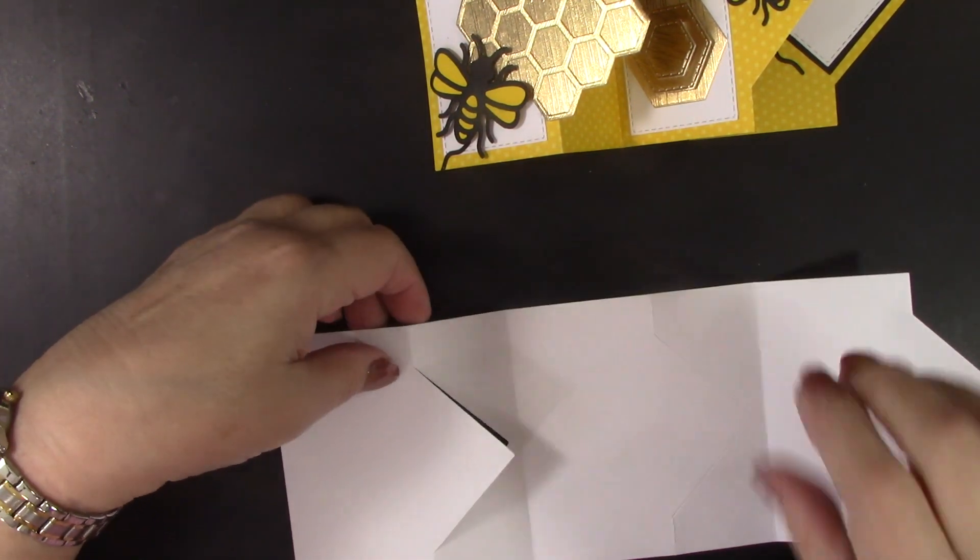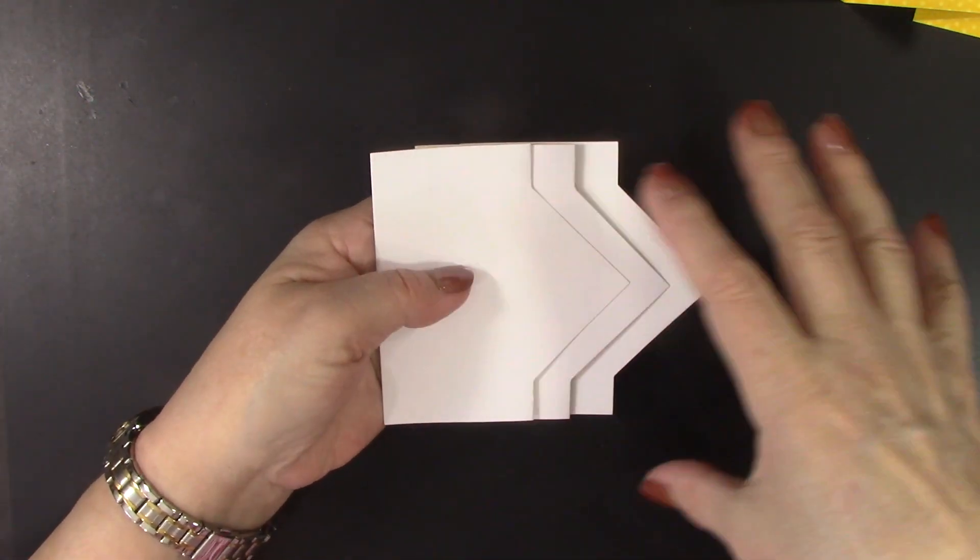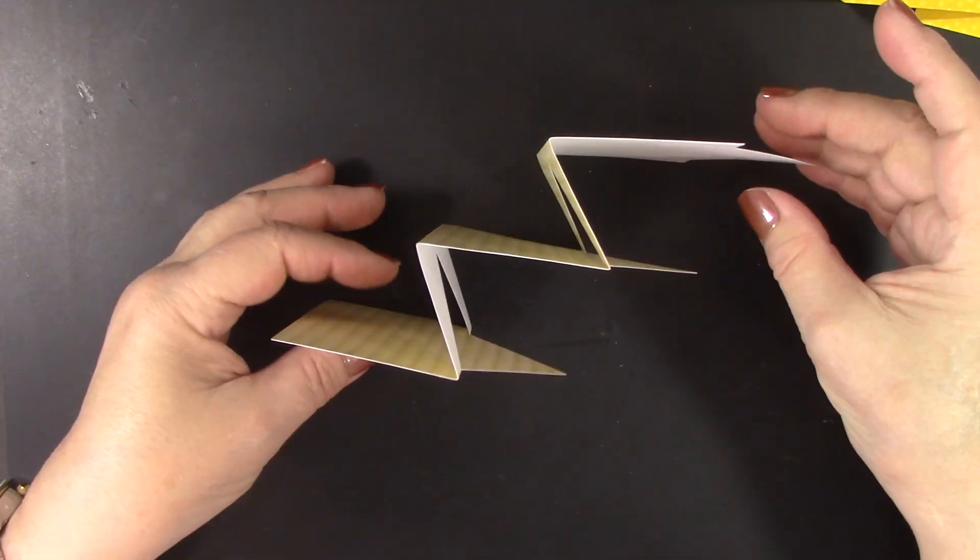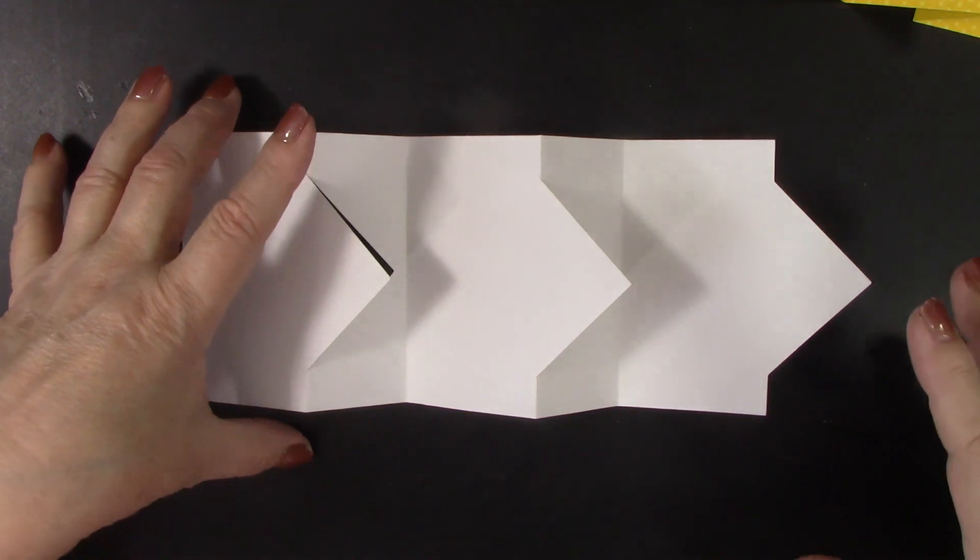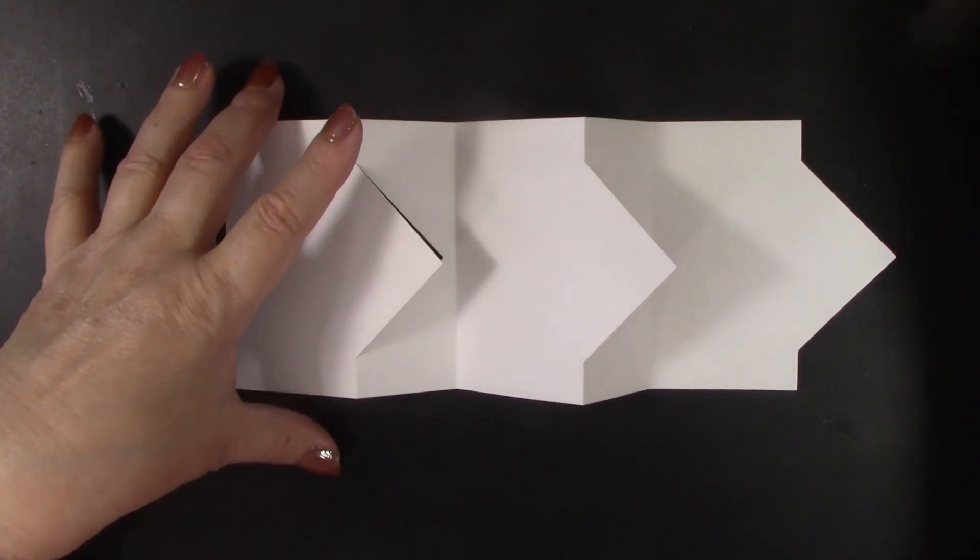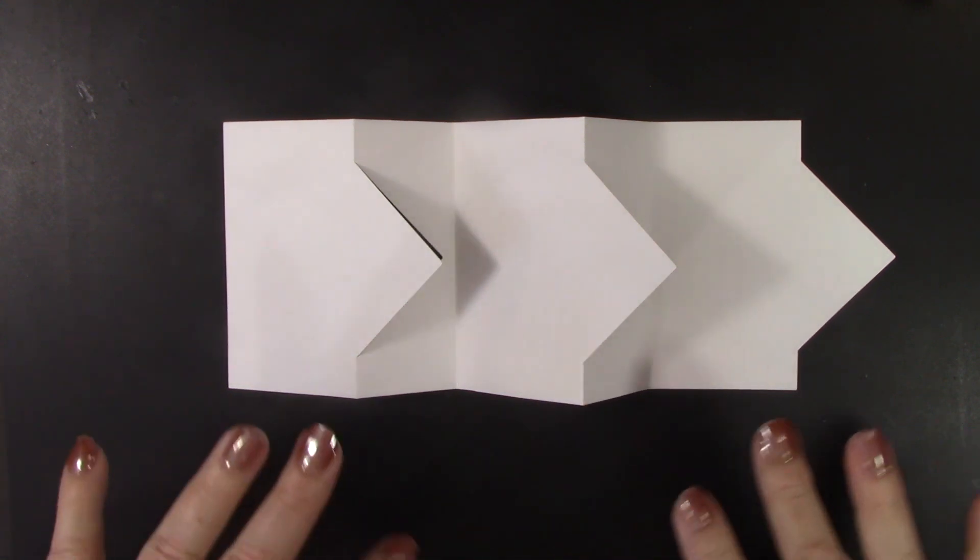And all you do is fold down, fold up, fold down, and fold up. And there is your basic shape. So again, very, very easy. And then all you do is decorate it as desired. So I have had some fun figuring out how I am going to decorate this. Maybe I will start on the back.